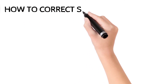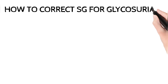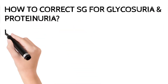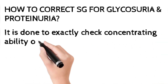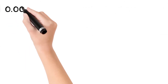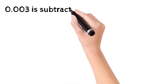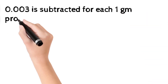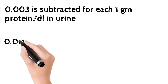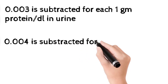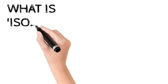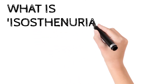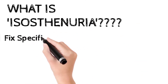To correct specific gravity for glycosuria and proteinuria — to nullify these effects and check true concentrating ability — subtract 0.003 for each one gram of protein per deciliter of urine present, and deduct 0.004 for each one gram of glucose per deciliter of urine.